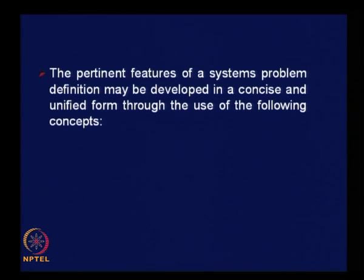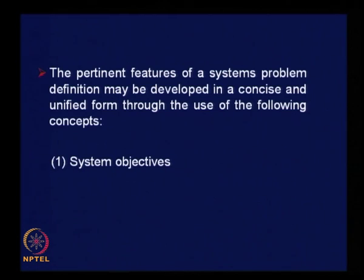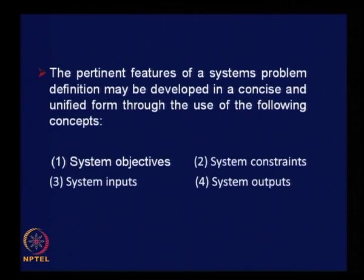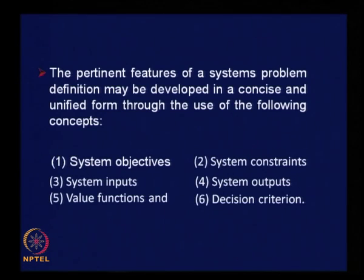The pertinent features of a system problem definition may be developed in a concise and unified form through the use of the following concepts: first, system objectives; second, system constraints; third, system inputs; fourth, system outputs; fifth, value functions; and sixth and last, decision criterion. Let us try to understand and define each of these terms clearly, so that at the end we have a clear understanding of the problem definition phase itself.